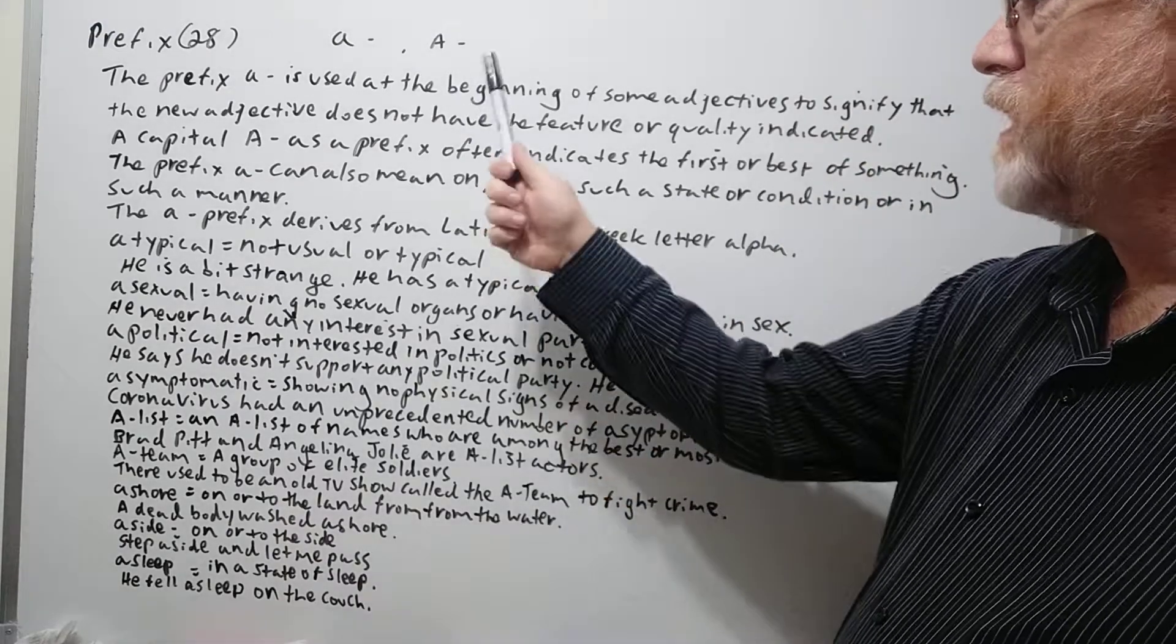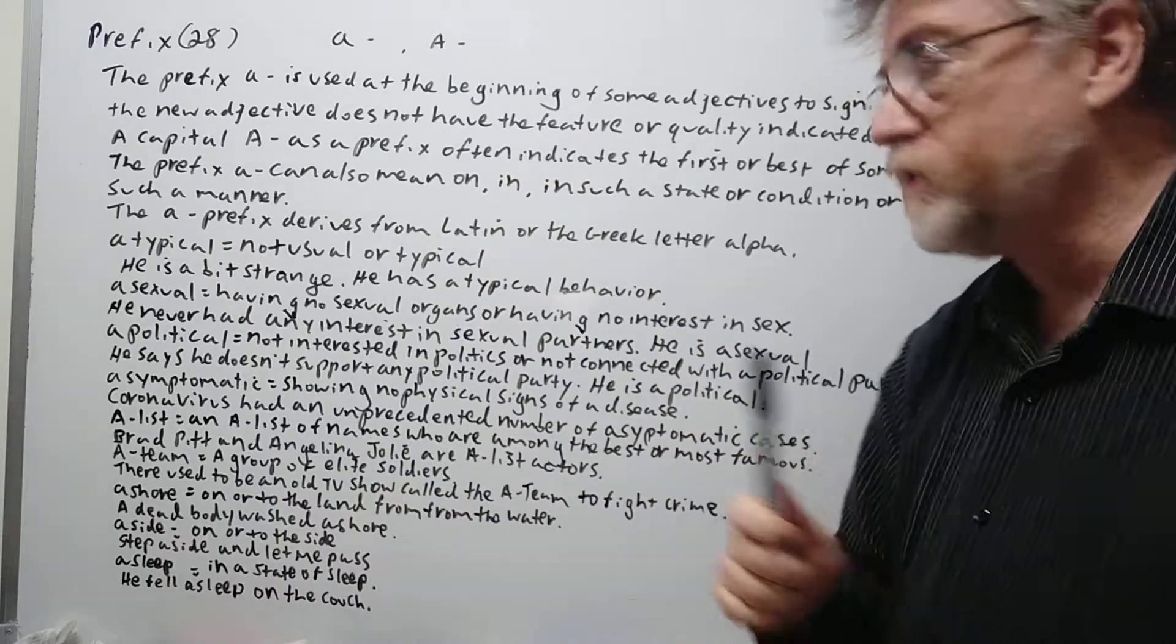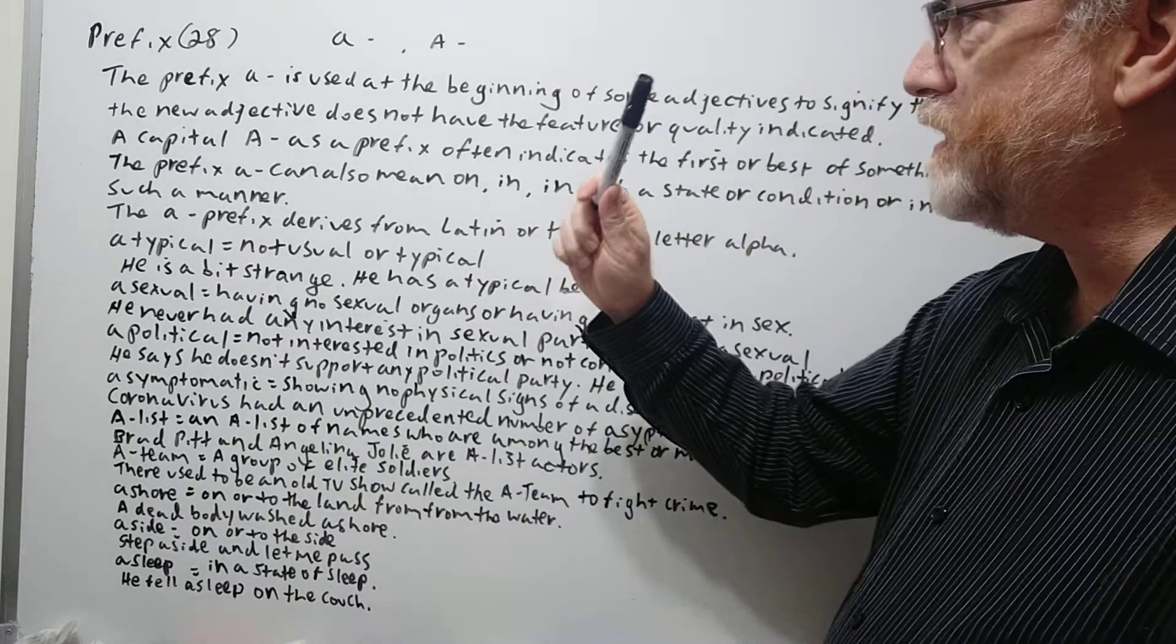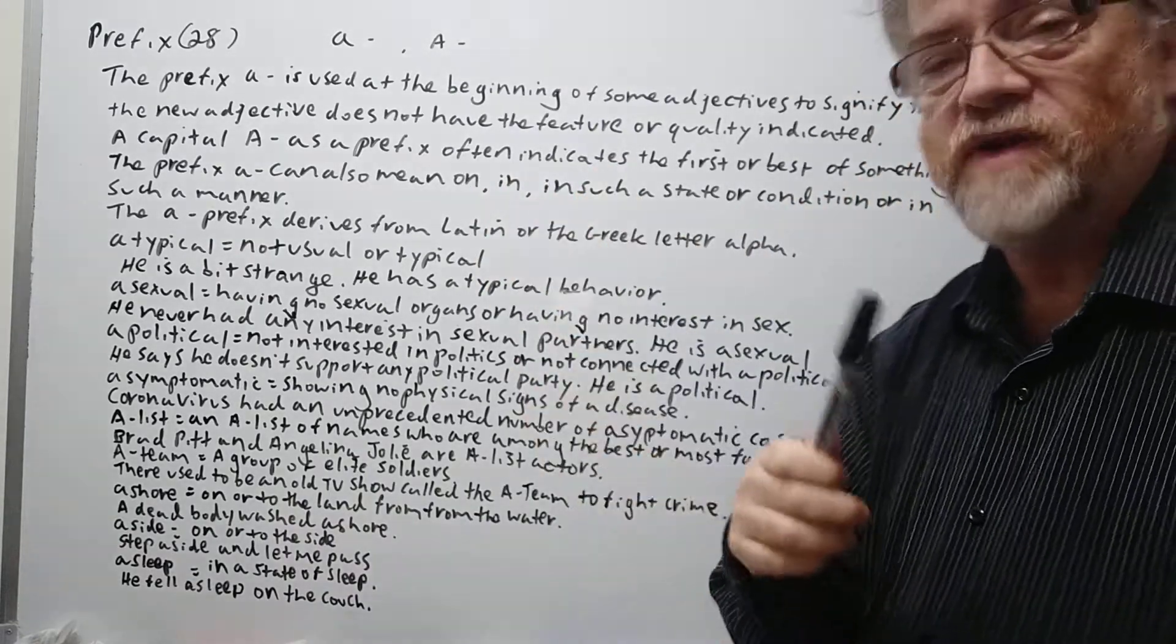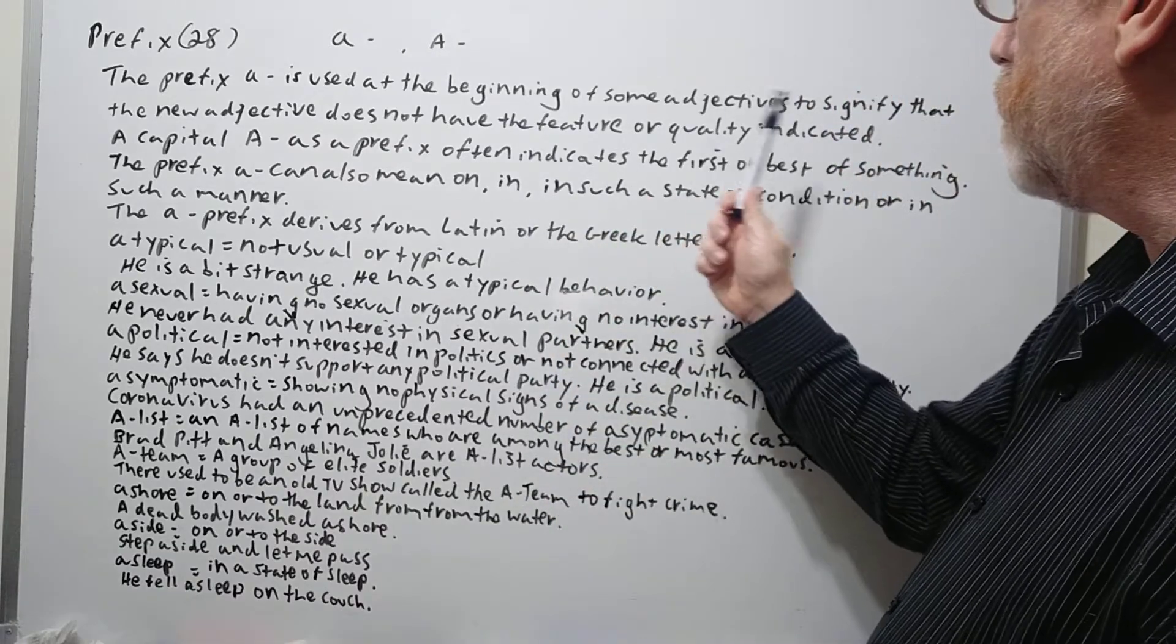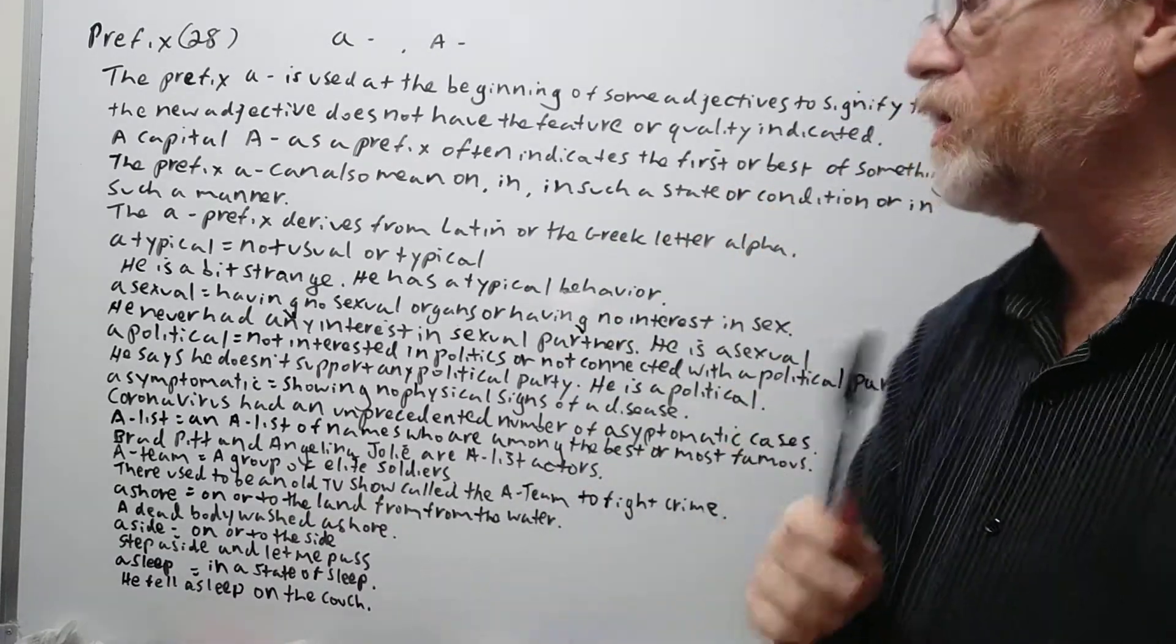The prefix a is used at the beginning of some adjectives to signify that the new adjective does not have that feature or quality indicated.